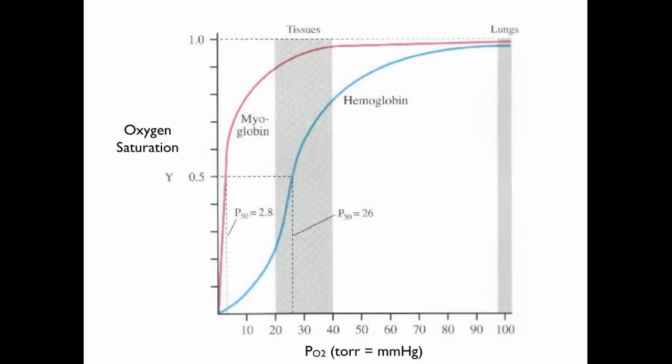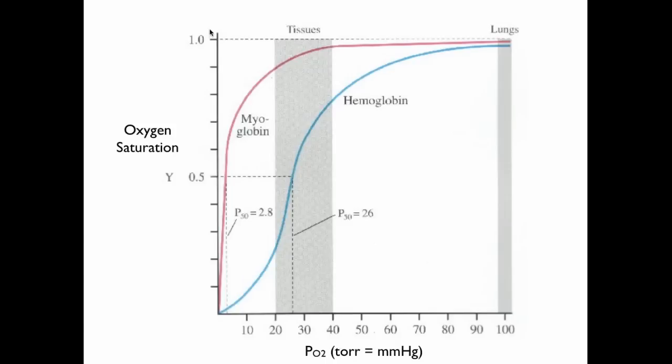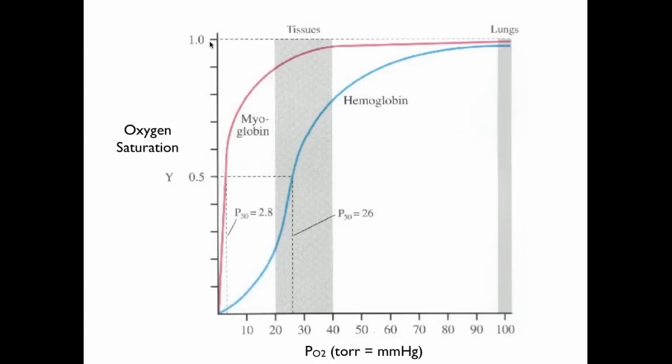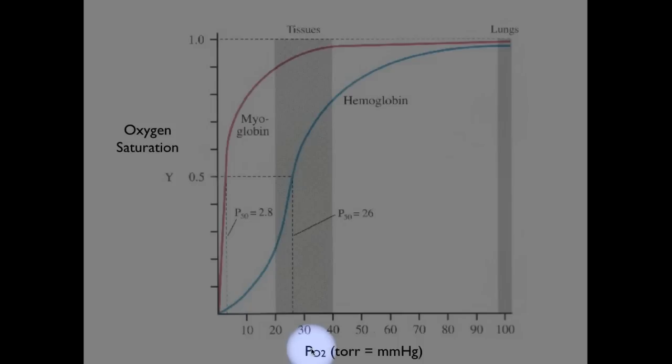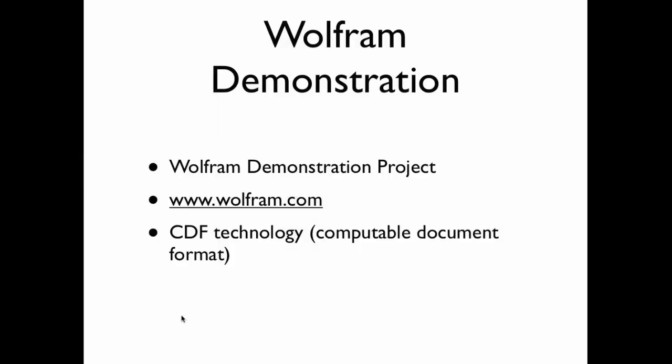Now, this is the graph that we're going to be looking at in greater detail here in a second. You want to pay attention, first of all, to what the axes are, as always. The Y is oxygen saturation. So all the way at the top, this is 100% saturation. It means that the molecules have as much oxygen as they can hold. The X is the partial pressure of oxygen measured in torr or millimeters of mercury. It's the same. And using an amazing piece of software called Wolfram Demonstration Project in CDF technology, we're going to get to take a look at this in much more detail. And I'll be able to show you what the saturations of myoglobin and hemoglobin look like as we change PO2 and as we change pH. So let's take a look.